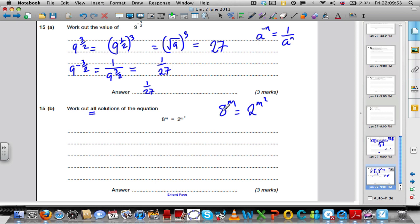Well, I could. I could write that as 2 to the power of 3. 8 is 2 to the power of 3, and all of this to the power of m. That is equal to 2 to the power of m squared.